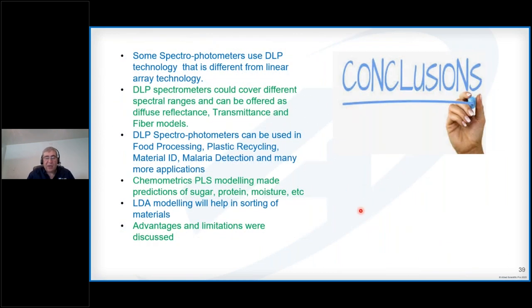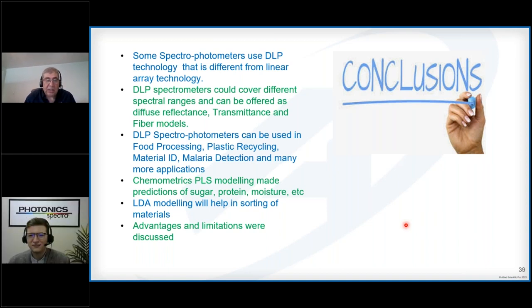That brings us to the end of our talk and the conclusion. We talked about use of DLP spectrophotometers and how they are different from linear array technology. We showed different models of DLP spectrophotometers - the transmittance, the reflectance, and the fiber model. We showed that these spectrophotometers can be used for food processing, material ID, plastic recycling, and disease detection such as malaria. We discussed the chemometrics, the PLS modeling and LDA modeling for quantification and sorting. We also looked at some of the limitations of these devices. With this, I thank you for your attention. If there are any questions, please feel free to ask.